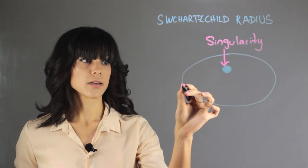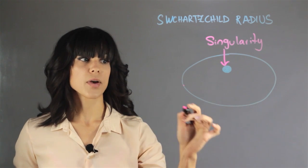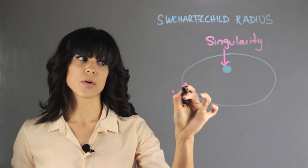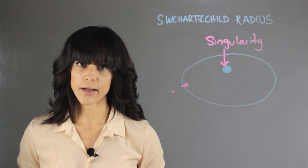This is called the Schwarzschild radius. And this is the line where if you have light out here, it can escape. Anytime it crosses the Schwarzschild radius, it will be sucked into the black hole.